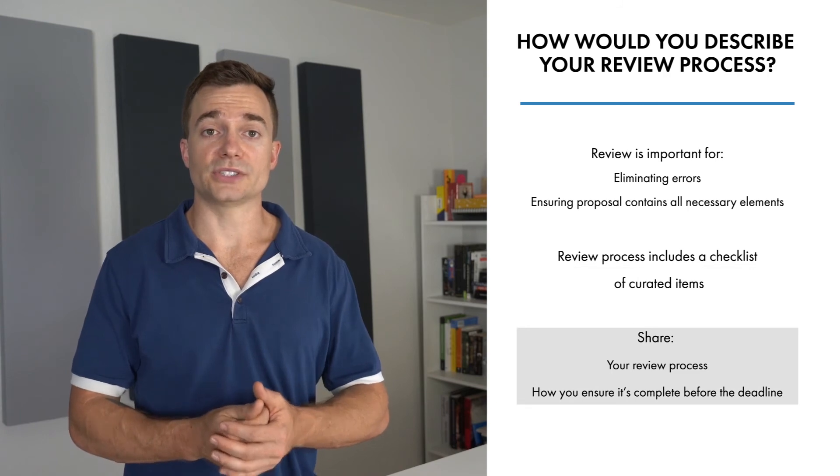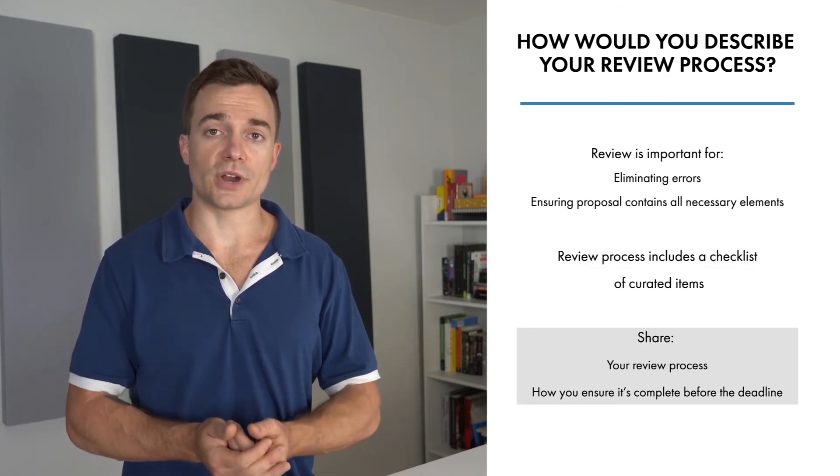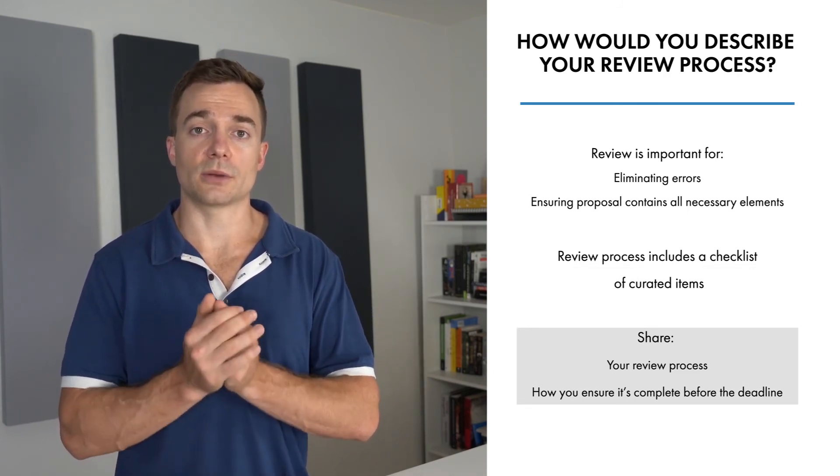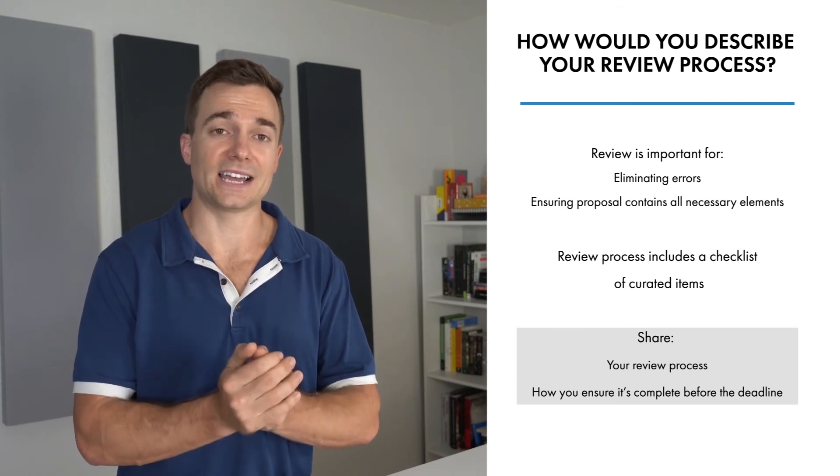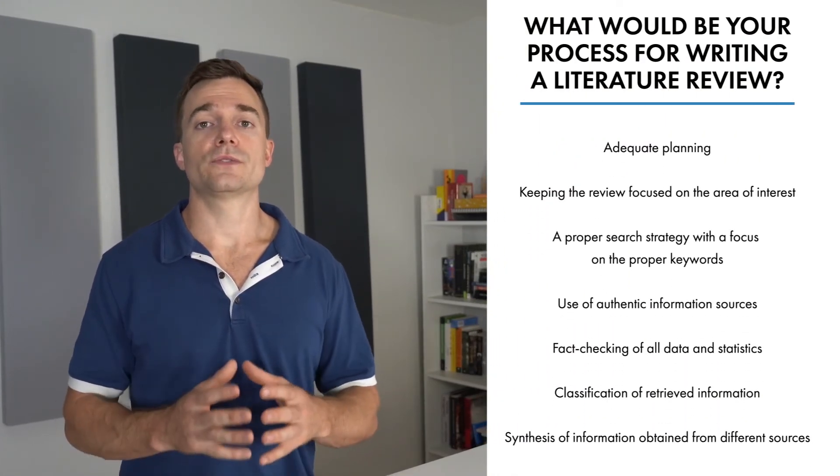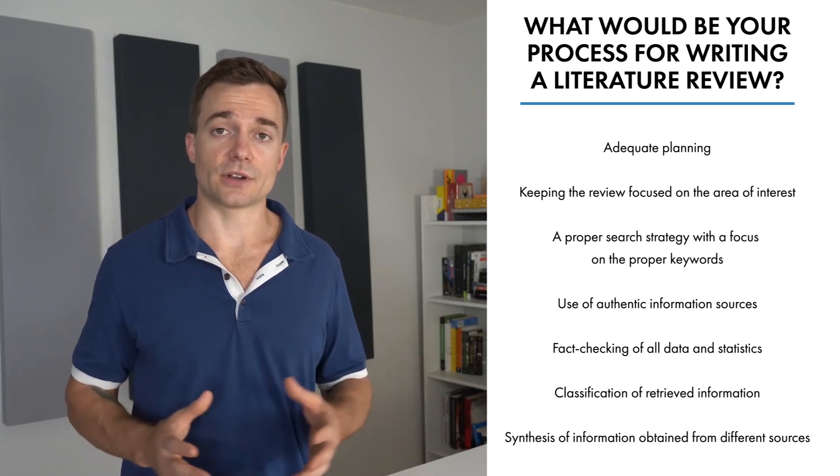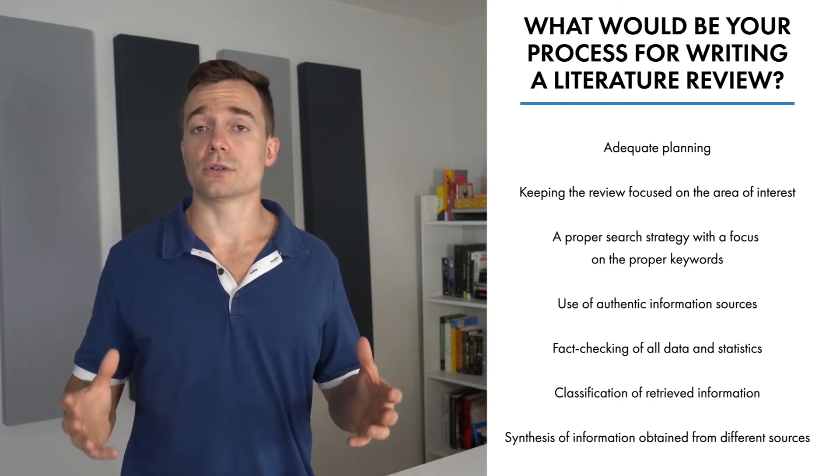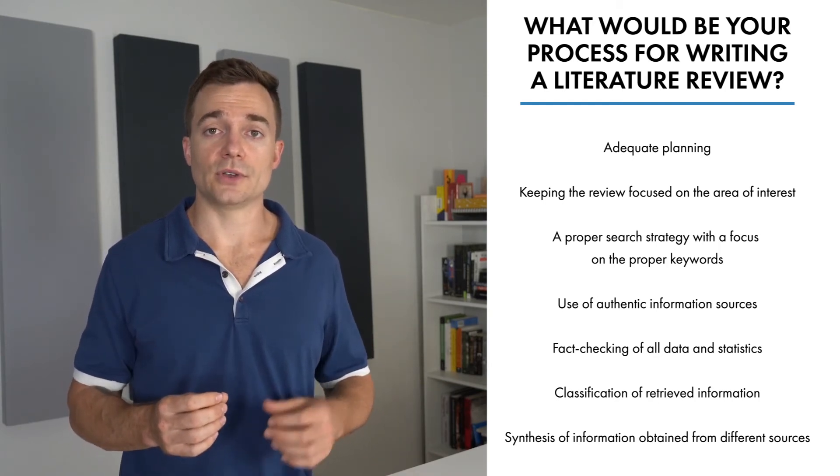You can share your review process, how you ensure that the proposal preparation and review processes are completed well before the submission deadline, as well as how you communicate with the different subject matter experts to ensure all factual information is in your document. This leads us to another question: what would be your process for writing a literature review? Literature reviews form the basis for all types of scientific writing. The process for a literature review involves the following steps: adequate planning, keeping the review focused on the area of interest, a proper search strategy with a focus on the proper keywords, use of authentic information sources, fact checking of all data and statistics, classification of retrieved information, and synthesis of information obtained from different sources.